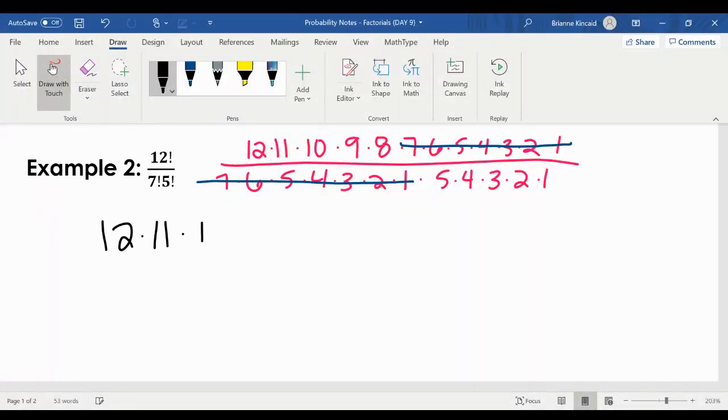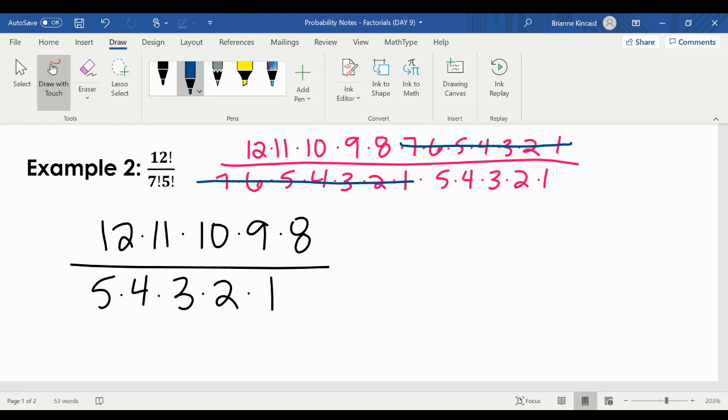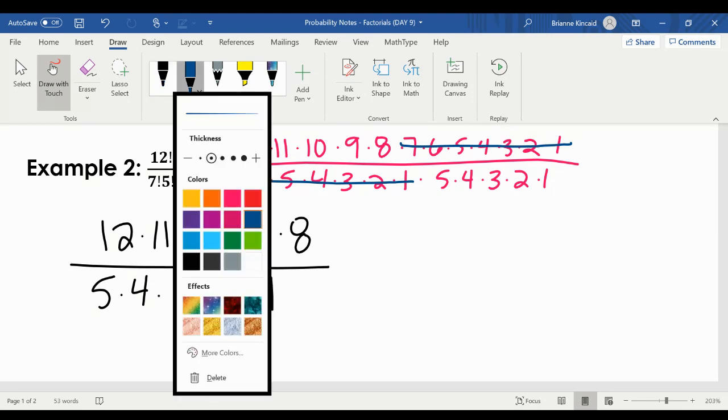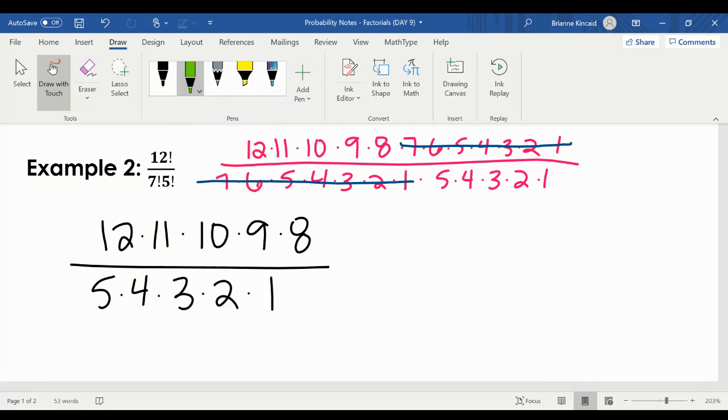So in the numerator, I have 12 times 11 times 10 times 9 times 8 over 5 times 4 times 3 times 2 times 1. And now you can do a couple of different things. So what I like to do is, like I said, simplify early and often. For example, in your denominator, you have 5 times 2.